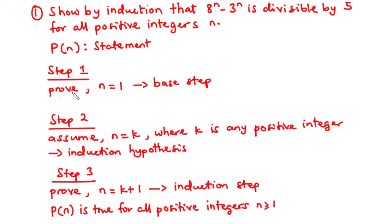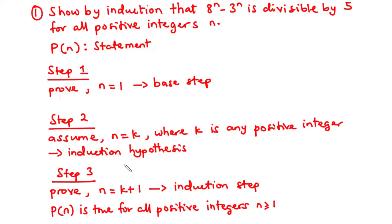Given a statement P involving the natural number n, there are basically three steps we need to go through. The first step is where we prove that the statement is true for the first term, that is when n is equal to 1, and we call this the base step. For step 2, we assume that the statement is true for n equals k, where k is any positive integer, and we call this the induction hypothesis.